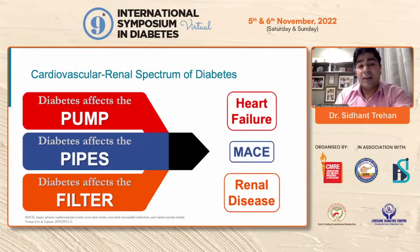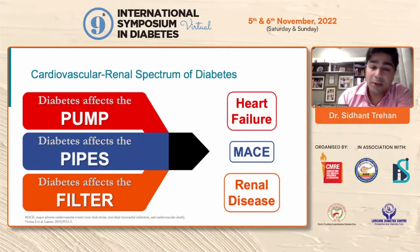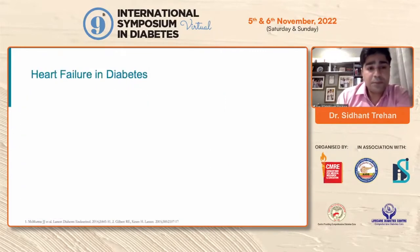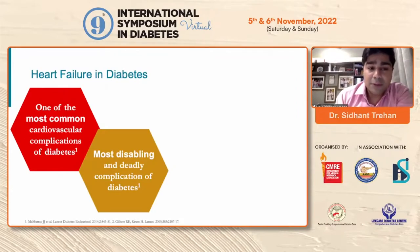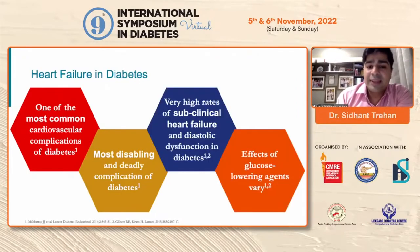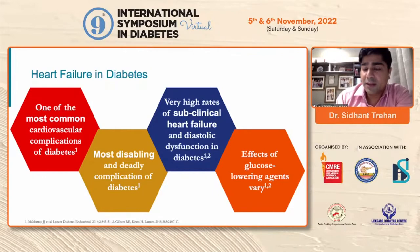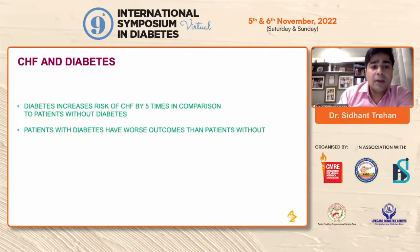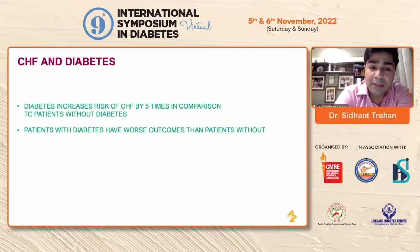Basically, diabetes is acting on the pump which is our heart, it is affecting our pipes which are the macro and microvasculature, and it is affecting our filter which is the kidney. Heart failure in diabetes is one of the most common cardiovascular complications — it is a disabling and deadly complication of diabetes, with very high rates of subclinical heart failure and diastolic dysfunction. The effect of glucose-lowering agents varies quite a lot because heart failure is itself an inflammatory condition and leads to insulin resistance. Diabetes increases the risk of heart failure by five times compared to patients without diabetes, and patients with diabetes tend to have much worse outcomes.